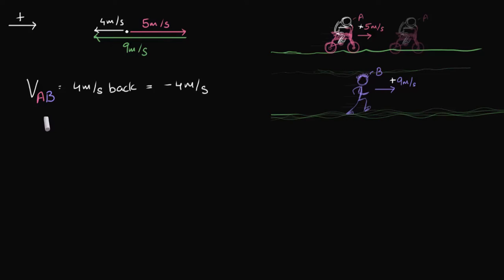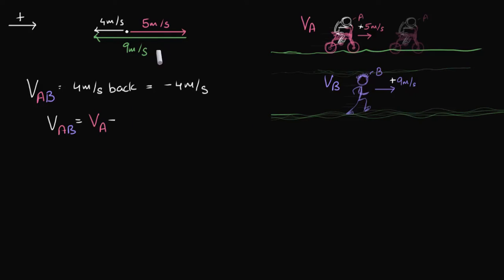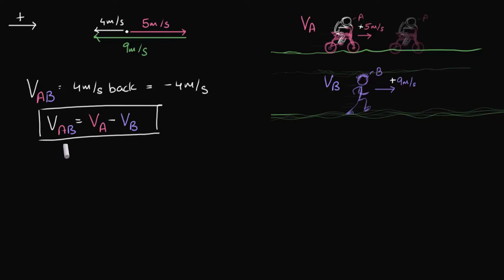Now, can we build a formula for this? Let's say this person has velocity VA towards the right, and this person has velocity VB. What is VAB? What we did to calculate relative velocity is we did five minus nine. Five is VA, and nine is VB. So the formula is: VAB equals VA minus VB. It's a very simple formula to remember, and it helps you calculate the velocity of A with respect to B.